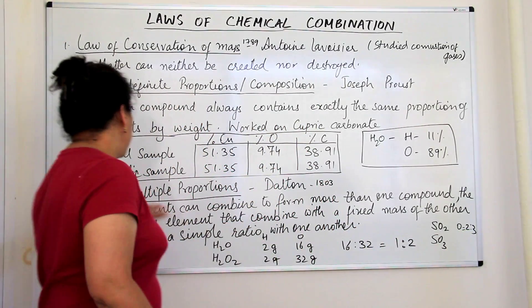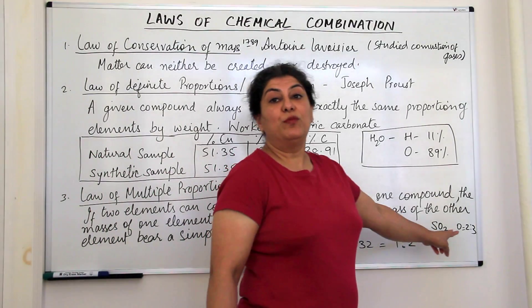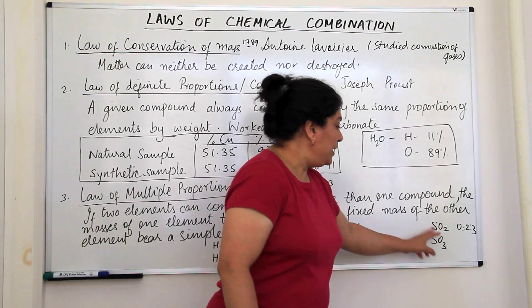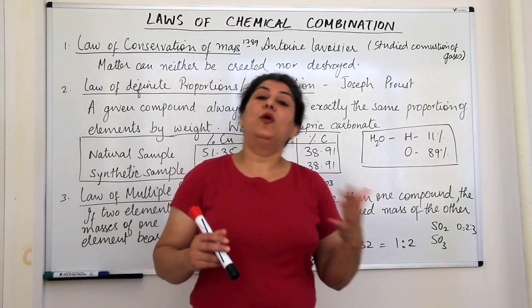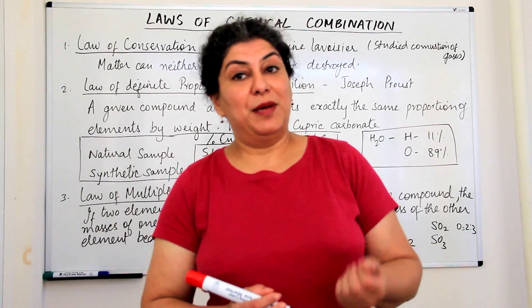So we understand from the law of multiple proportions that when two atoms combine to form more than two compounds, then the masses of one of these which combine with the fixed mass of the other should be a simple whole number ratios to each other. So this was the law of multiple proportions.